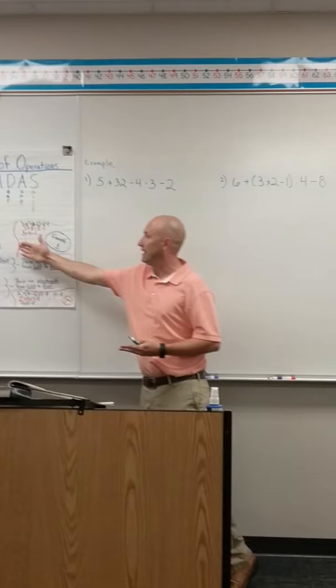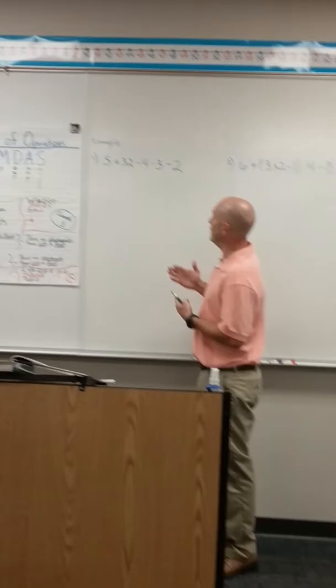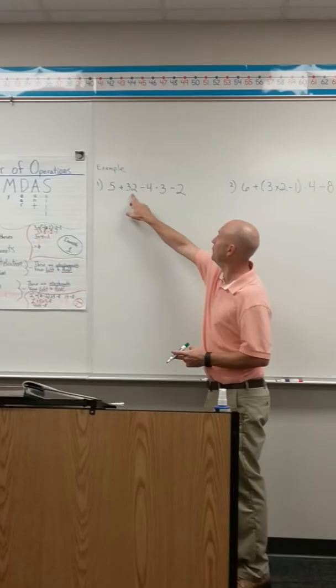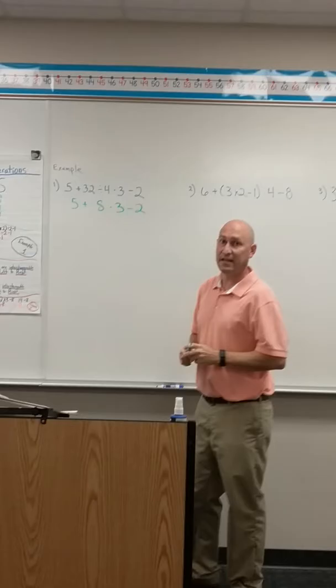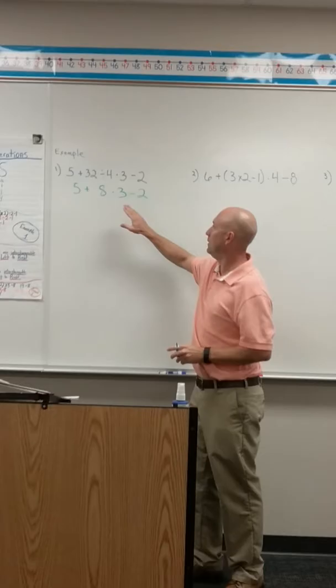So the first thing we're going to look at in this problem, 5 plus 32 divided by 4 times 3 minus 2. Ask ourselves, what comes first? I don't see any parentheses. I do not see any exponents in this problem. So once I get down to multiplication and division, I'm looking for the one that's farthest left. In this case, it's 32 divided by 4. So 32 divided by 4 is 8. I'm going to bring down everything else around it.